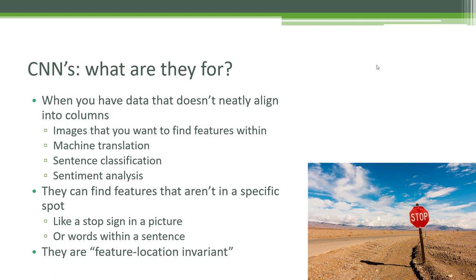CNNs are not just limited to image analysis. They can also be used for any problem where you don't know where the features you care about might be located within your data. Machine translation and natural language processing are good examples — you don't necessarily know where the noun, verb, or phrase you care about might be in a sentence. Sentiment analysis is another application, and the idea behind it isn't really as complicated as it sounds.